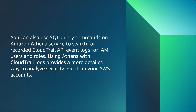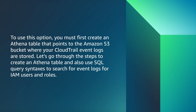You can also use SQL query commands on Amazon Athena to search for recorded CloudTrail API event logs for IAM users and roles. Using Athena with CloudTrail logs provides a more detailed way to analyze security events in your AWS account. To use this option, you must first create an Athena table that points to the Amazon S3 bucket where your CloudTrail event logs are stored. Let's go through the steps to create an Athena table and also use SQL query syntaxes to search for event logs for IAM users and roles.